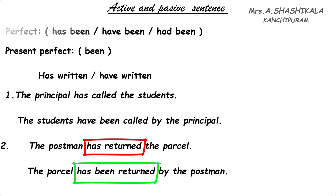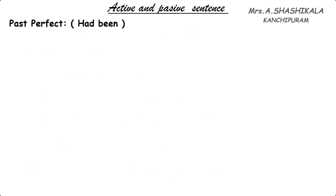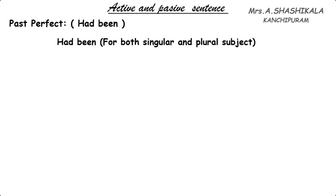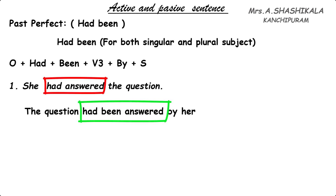Next is the past perfect. In past perfect we are going to use 'had' plus V3 in the active — for example, 'had written'. Both singular and plural subjects use 'had' followed by the V3 form. When writing this in passive, we use 'had been' plus V3 of the verb. Example: 'She had answered the questions.' 'Had answered' is the verb, 'she' is the subject, 'the questions' is the object. Passive: 'The questions had been answered by her.'